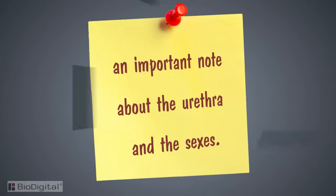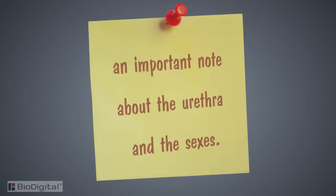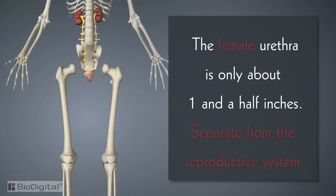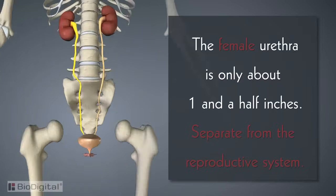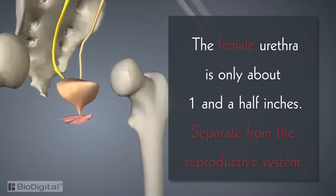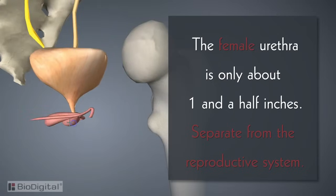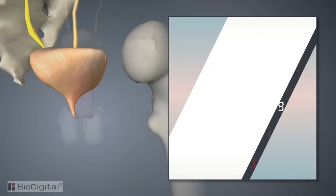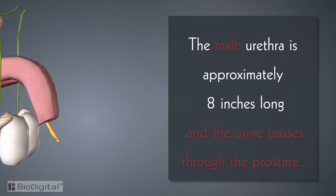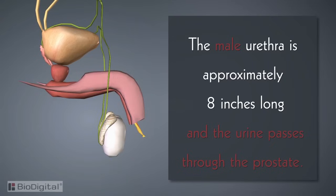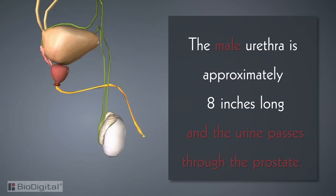Here's a very important note about the urethra and the sexes. In females, the urethra is only about one and a half inches long and is separate from the reproductive system. In males, the urethra is approximately eight inches long, and before the urine exits, it passes through the prostate gland.